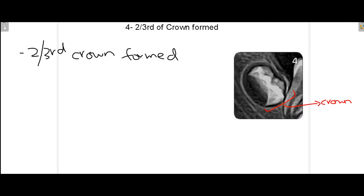At stage 4 more of the crown is now formed, and you can see approximately two thirds of the crown has now been completed. You can see this with the radiopacity in this bud where the tooth is forming.